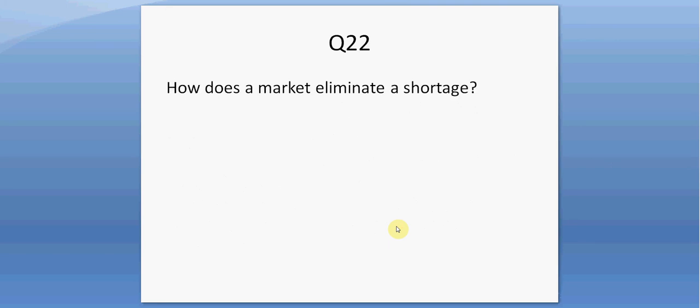Question twenty-two. How does the market eliminate a shortage? We expect the price to rise, as consumers in their frustration to get their hands on this product will bid the product's price higher. Question twenty-three. How does the market eliminate a surplus? We expect the price to fall as sellers are frustrated that they're producing all of this product they can't sell — sellers will try to lower their price to rid themselves of this excess merchandise.